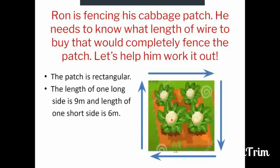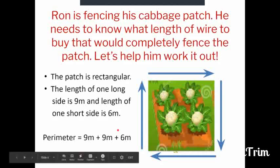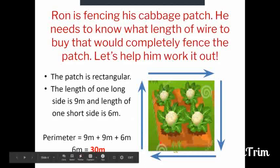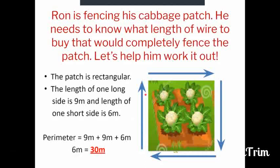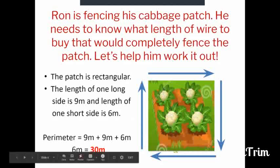And if we remember how to find parameter, we know that we can find the distance around this patch. So we know, in order to find that, we have to add all 4 sides. Like this: perimeter equals 9 meters plus 9 meters plus 6 meters plus 6 meters. And when we added all of that, we got a total of 30 meters.